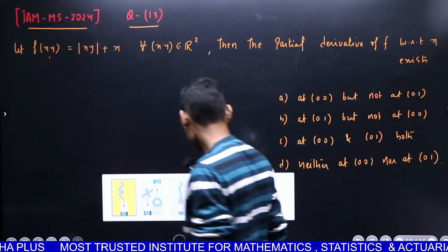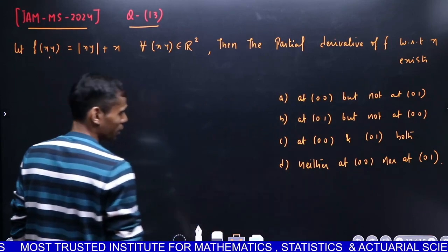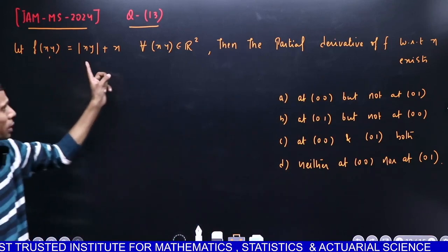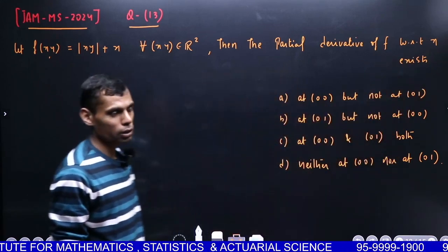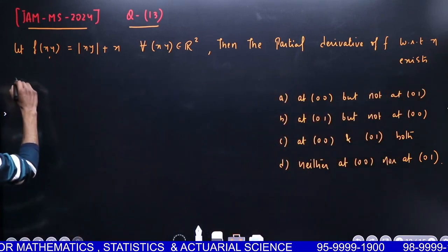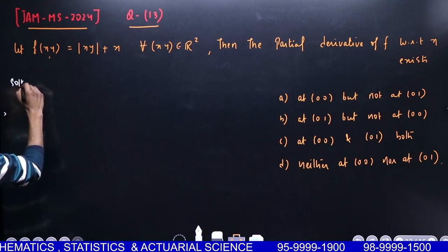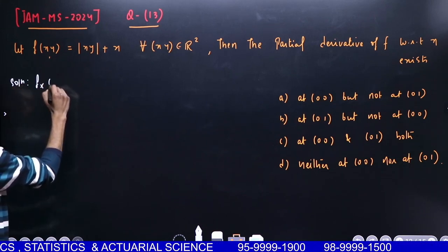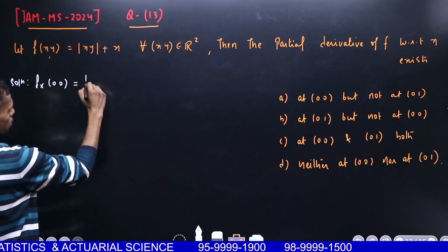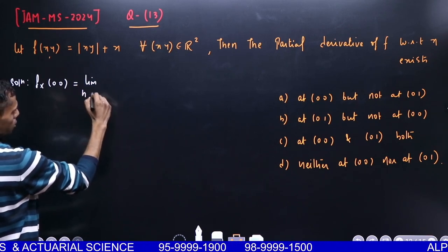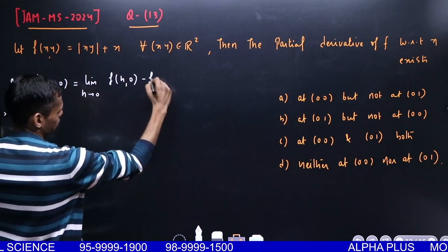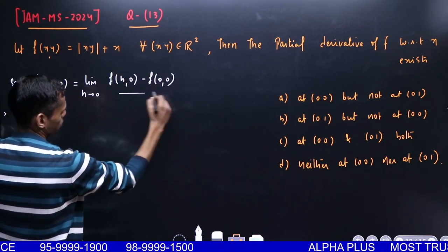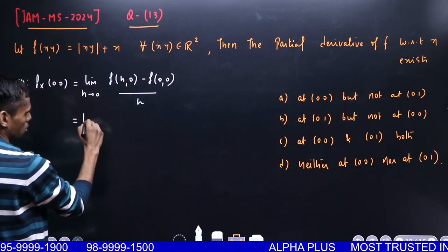Again, a tremendous question. Let's not waste any time. A function of two variables is given, f(x,y) = |x+y|, and they're asking at which of these points the partial derivative with respect to x exists. Let's first check what is the partial derivative at (0,0).